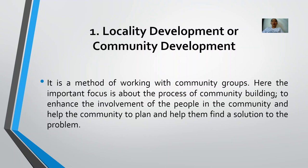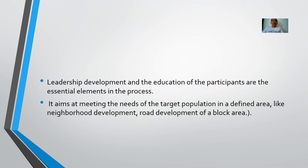According to Jack Rothman, there are three basic models for community organization. The first is called locality development, also known as community development. It is a method of working with community groups, and the focus is to bring about the process of community building. This will take time because we want to involve as many people as possible. In the process, we want to help the community plan and find solutions to their problems. We want the people themselves to realize they have a problem and to pull their resources together to find solutions.